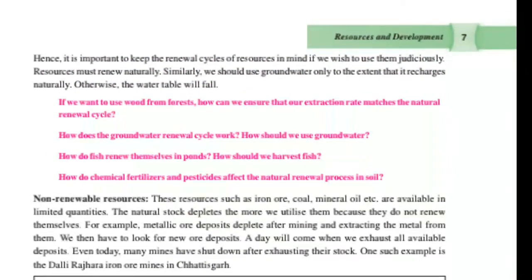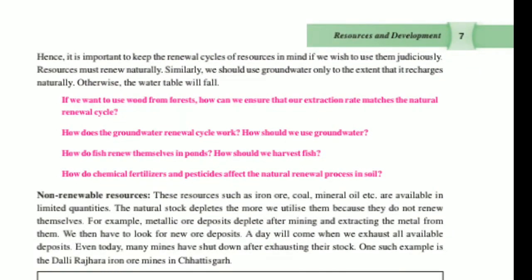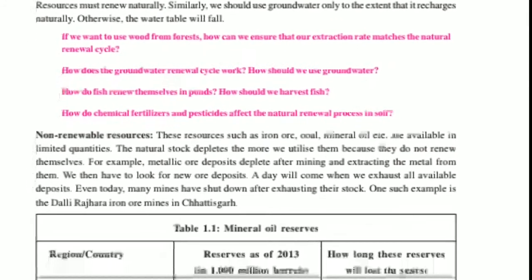We need to increase the volume of water in rivers to ensure they do not die. We need to maintain the process of water renewal by preventing disruption in the natural water cycle. We should use groundwater only to the extent it recharges naturally, otherwise the water table will fall.